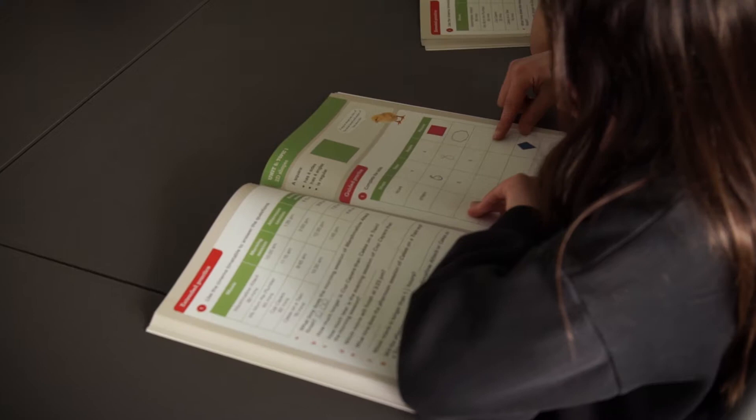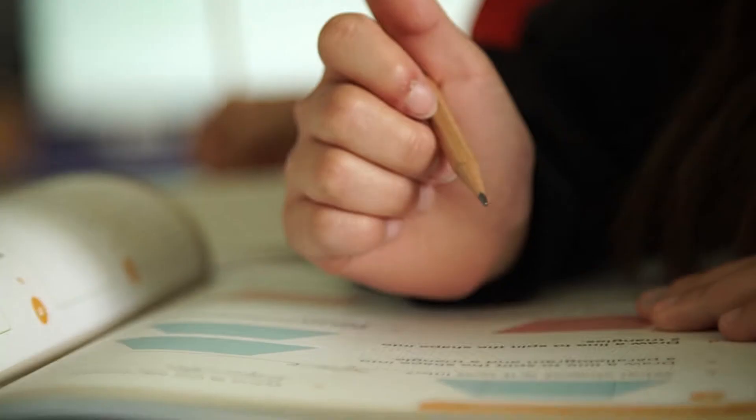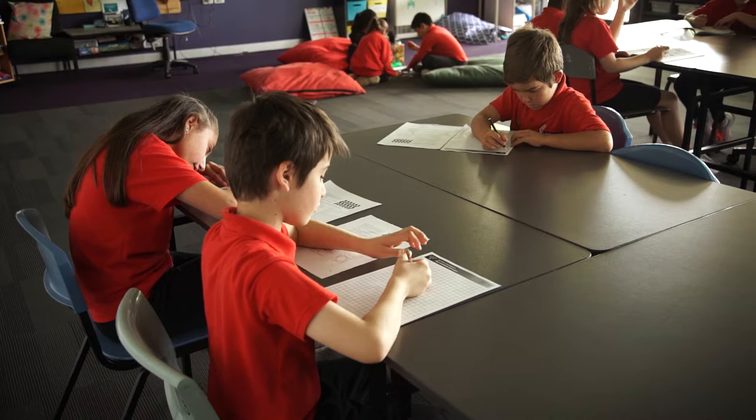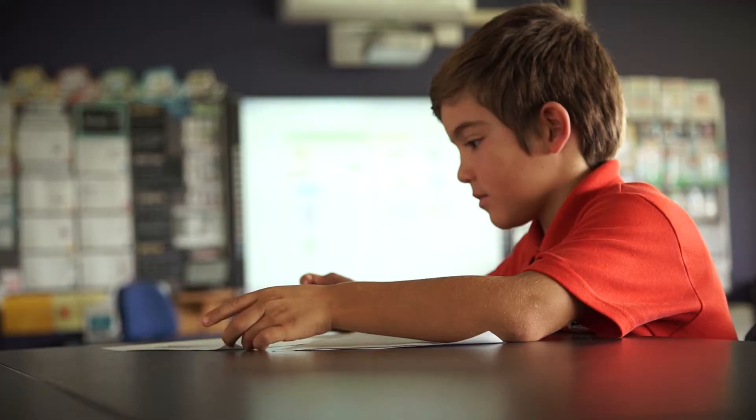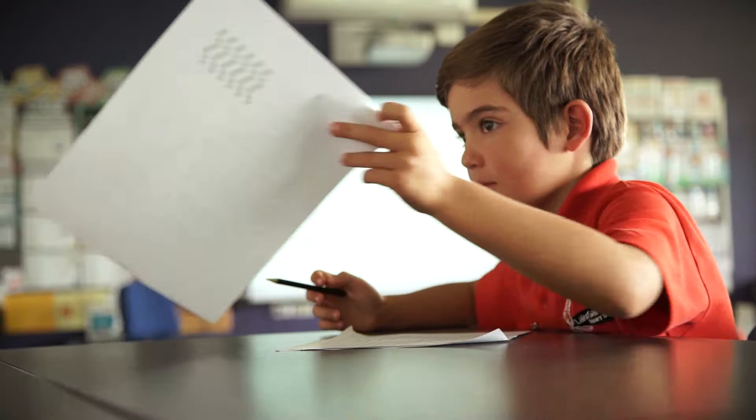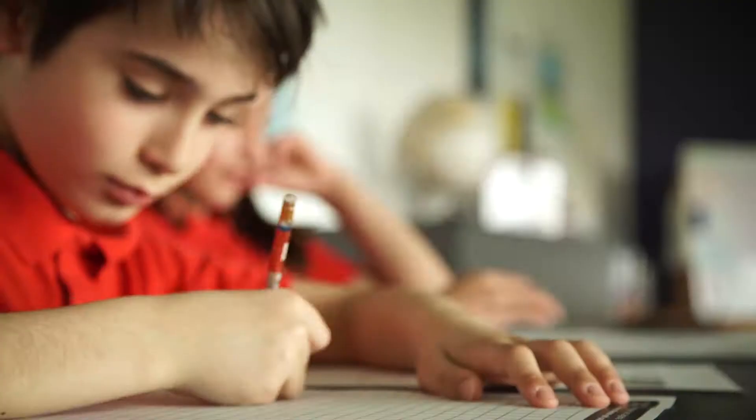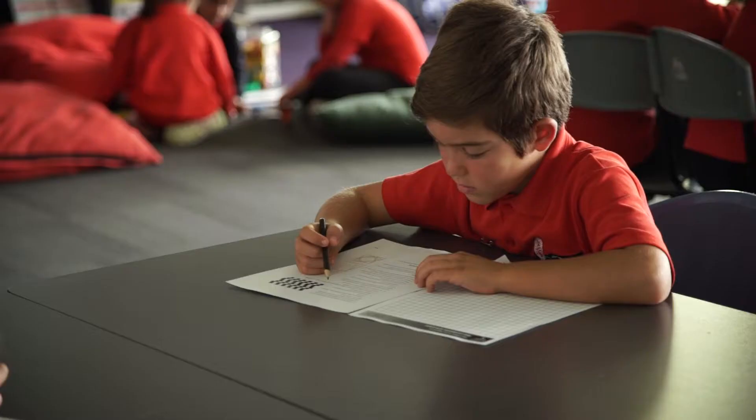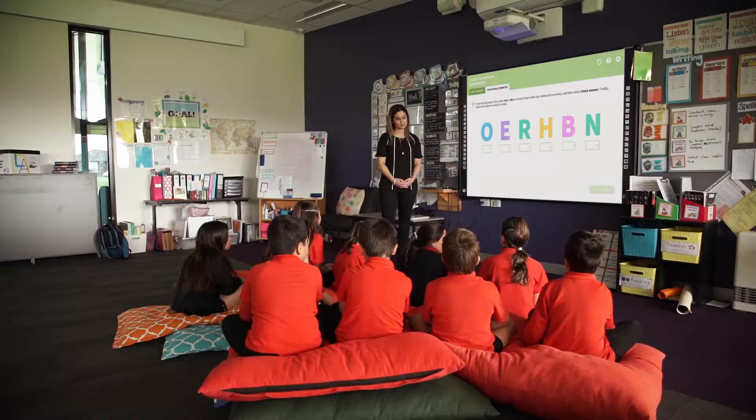Students who have shown in the pre-assessment that they are already proficient at the topic independently complete the guided and independent practice pages in the student book. To broaden and extend their understanding, activity sheets are also provided for each topic that offer a range of learning experiences from brain teasers and problem solving to research and design tasks. Students complete these tasks independently or cooperatively.